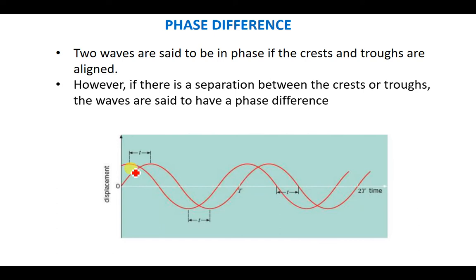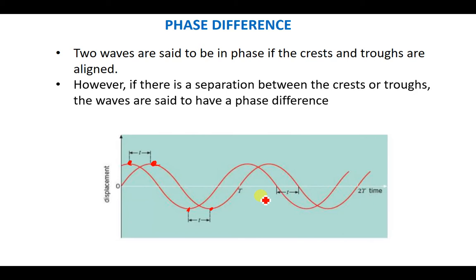So to clarify: if two crests and troughs are aligned, we say those two waves are in the same phase, or they are in phase. But if there is a difference between two crests or two troughs, then we say the two waves have a phase difference.